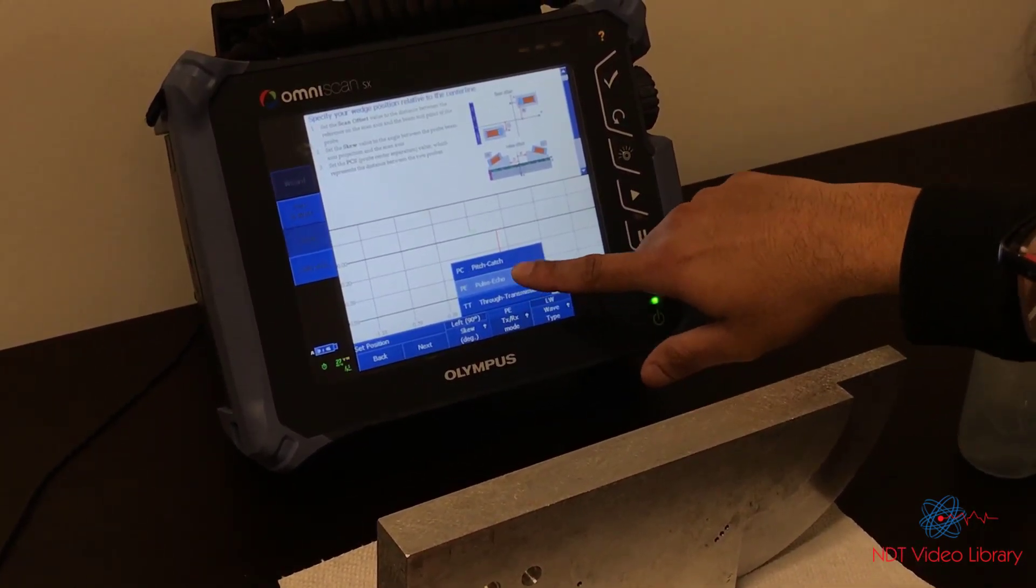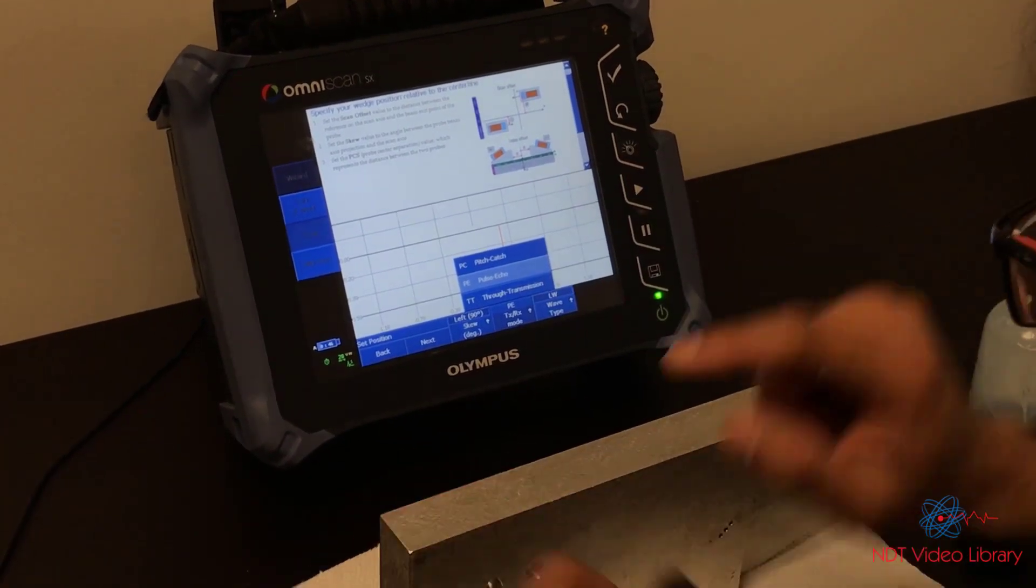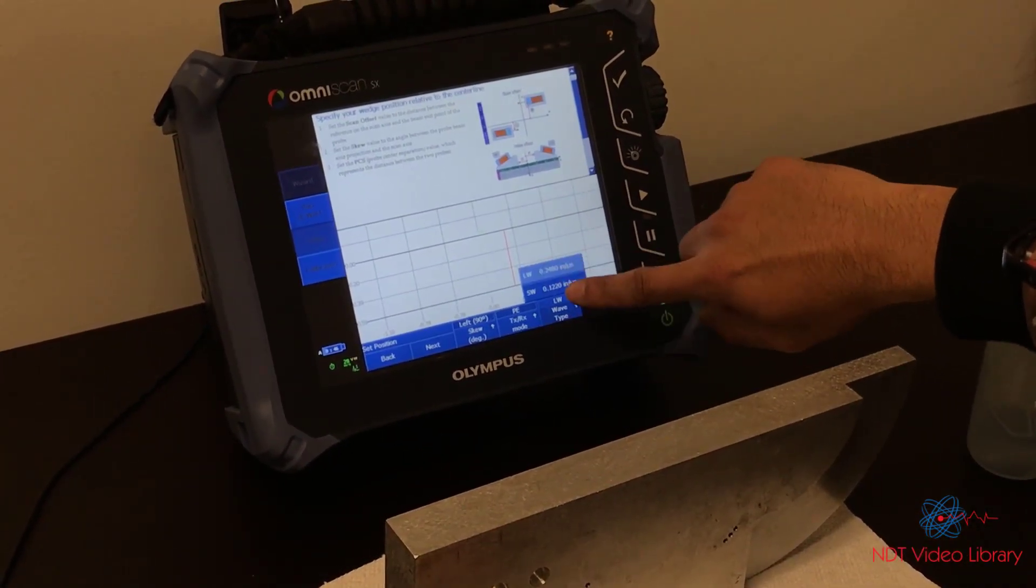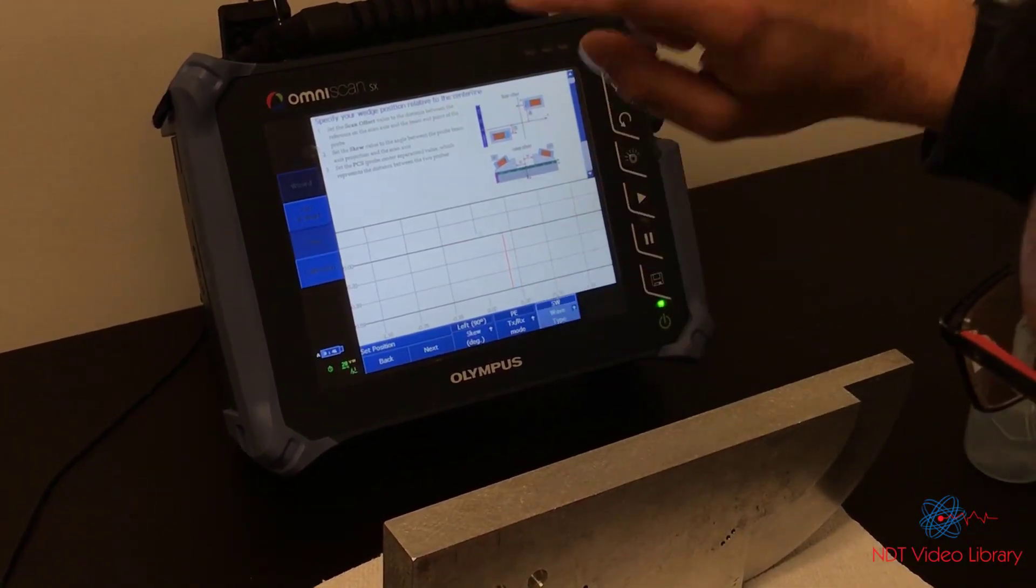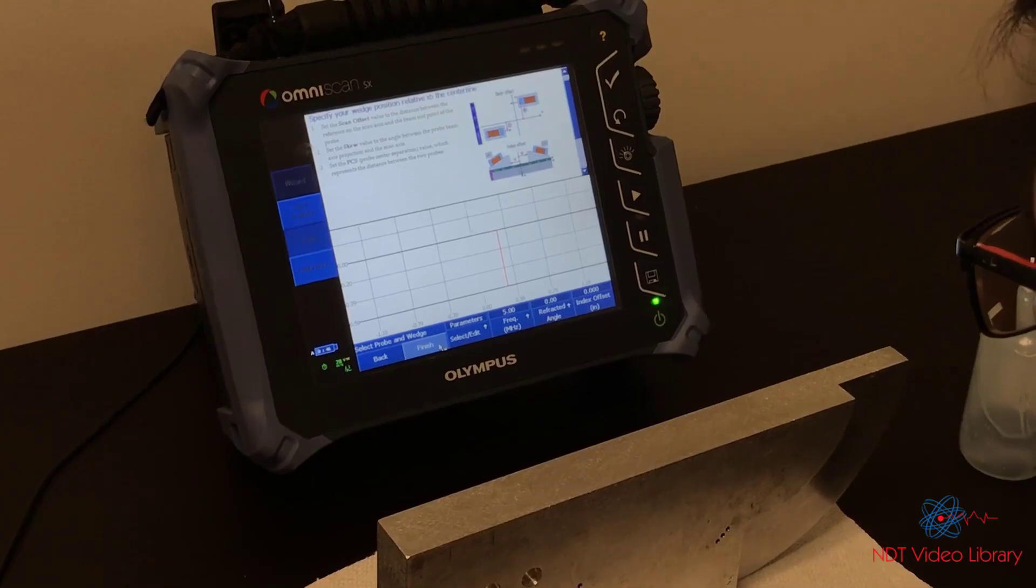Skew, we don't change it. This is pulse echo, single crystal, so PE. Wave type is going to be what? Shear wave. So we choose that. Next.